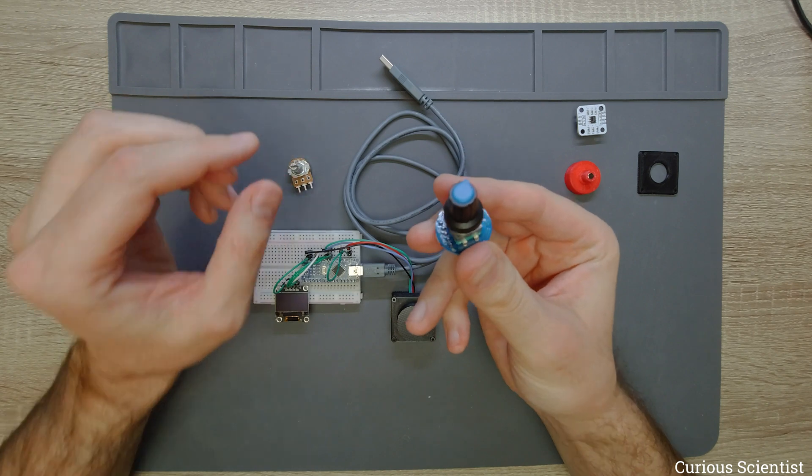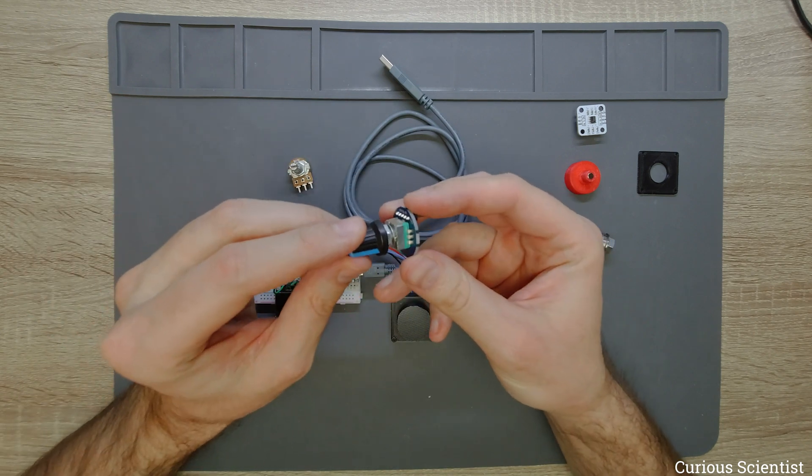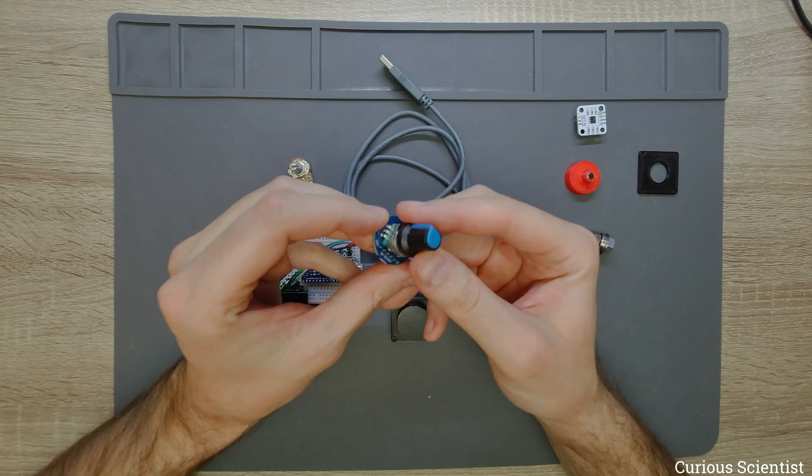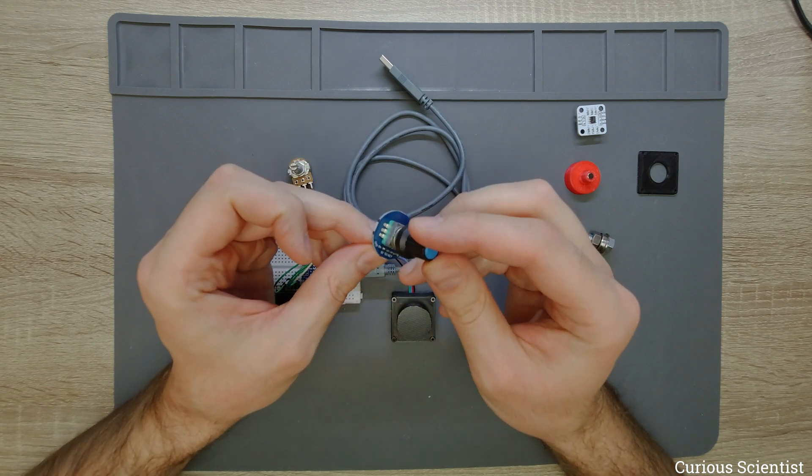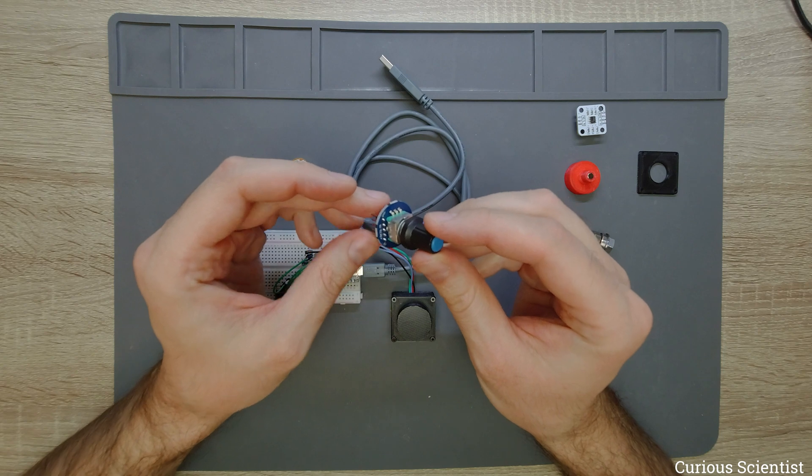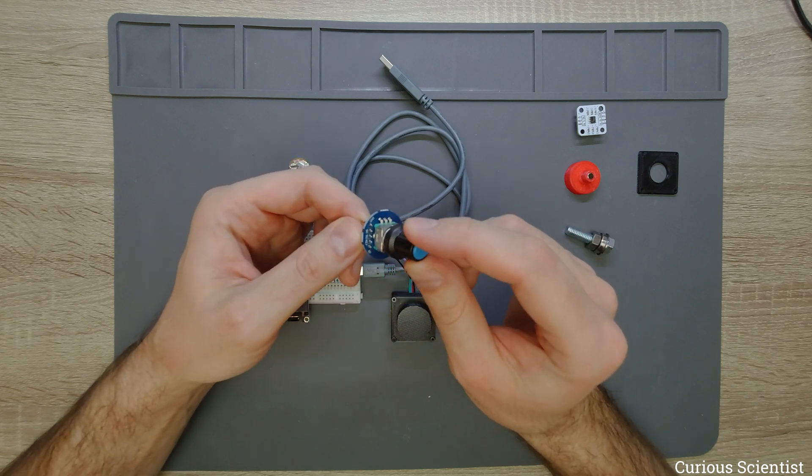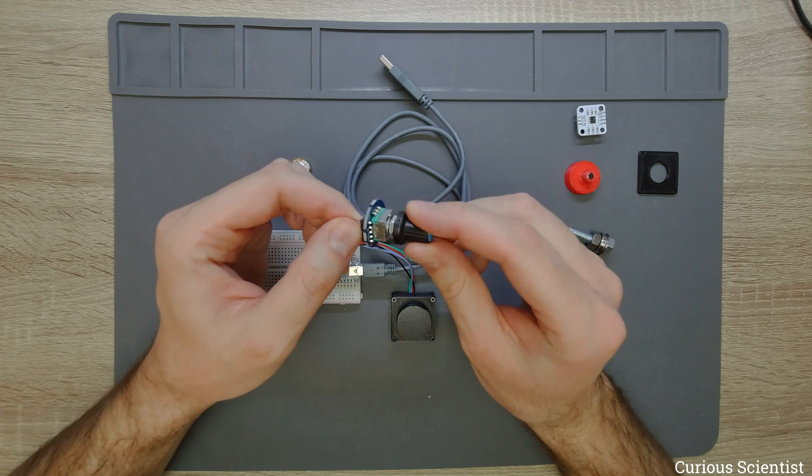However, if you have an encoder, a rotary encoder, this is a relative encoder. All you get is just two pulses on the CLK and the DT pins when you rotate and click the shaft of this encoder.